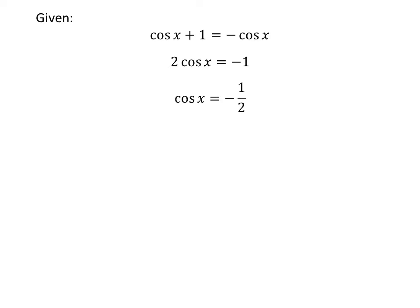Dividing the whole equation by 2 gives us cosine of x is equal to minus half.